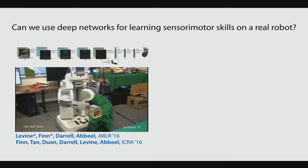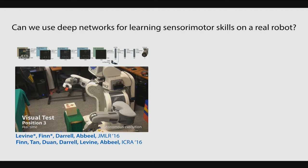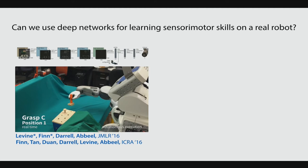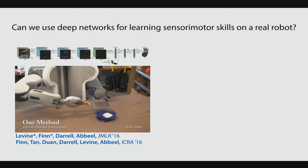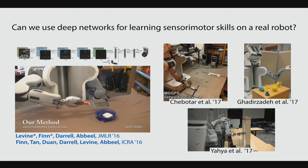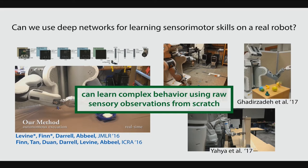Using this method, we were able to learn skills like inserting a block into a shape sorting cube, placing the claw of a toy hammer underneath a nail, screwing a cap onto a bottle, as well as in follow-up work, using a spatula to lift an object into a bowl. Since then there have been a number of follow-up works at USC, Google, and KTH to extend this research and work in other types of environments. So we can learn complex skills from scratch in the real world from raw sensory observations. So what's next? What's missing?